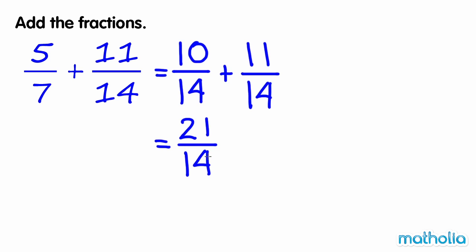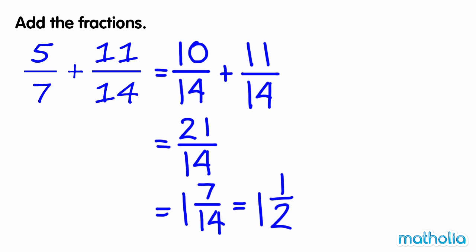21 14ths is an improper fraction. We can write it as the mixed number 1 and 7 14ths. 7 14ths is equal to 1 half, so 1 and 7 14ths is equal to 1 and a half. So 5 7ths plus 11 14ths is equal to 1 and a half.